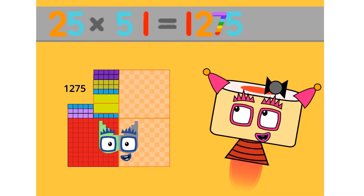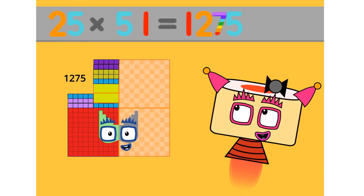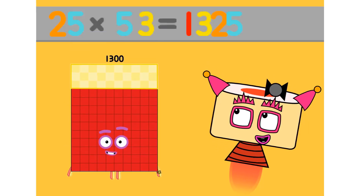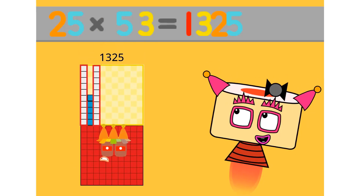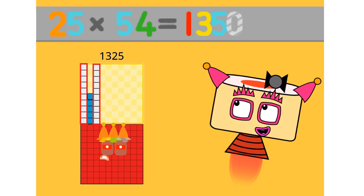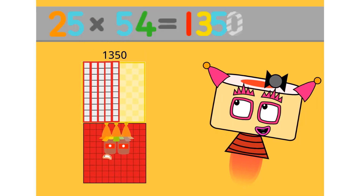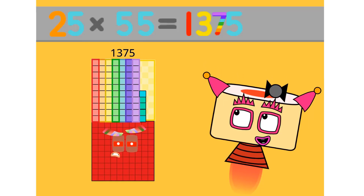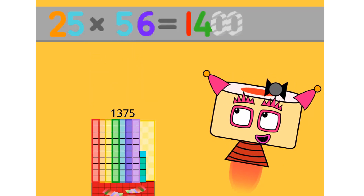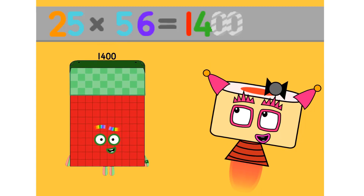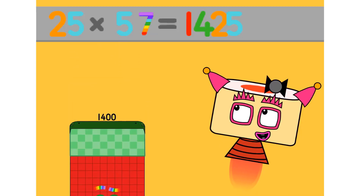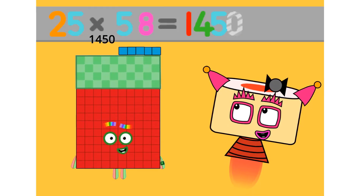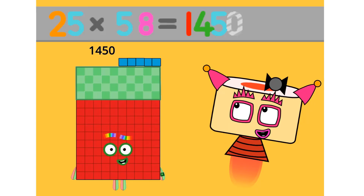25 times 51 equals 1275. 25 times 52 equals 1275. 25 times 53 equals 1325. 25 times 54 equals 1350. 25 times 55 equals 1375. 25 times 56 equals 1400. 25 times 57 equals 1425. 25 times 58 equals 1450.